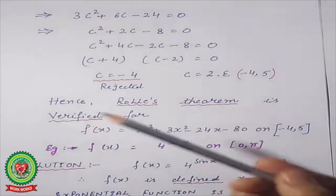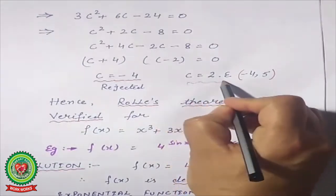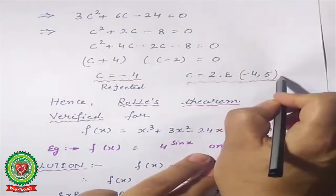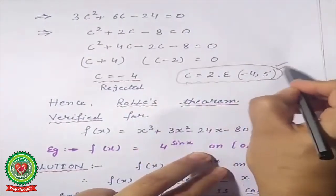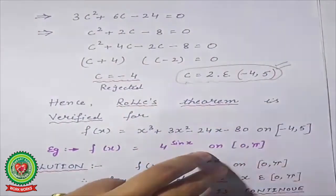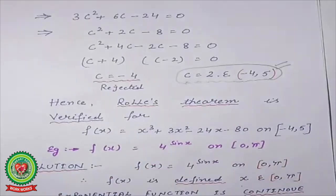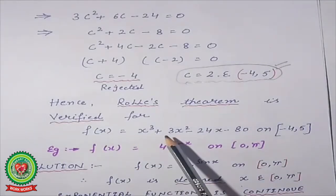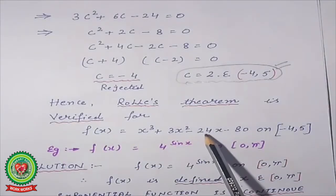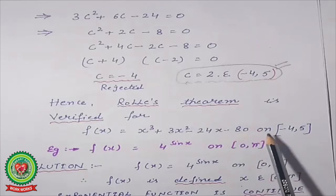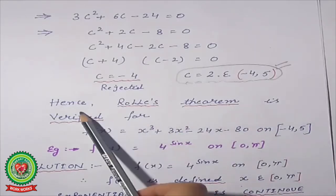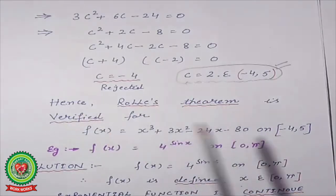Also make sure to mention that c belongs to the open interval at the end of your answer — most students lose marks here. The function is f(x) = x³ + 3x² − 24x − 80 on [−4, 5], and Rolle's theorem is verified for this case.